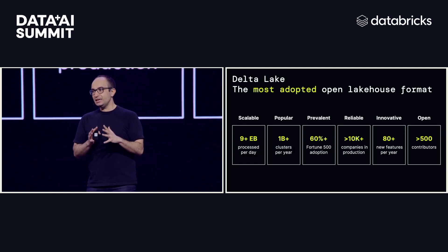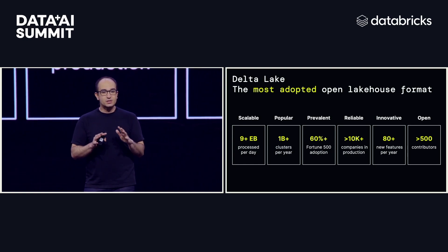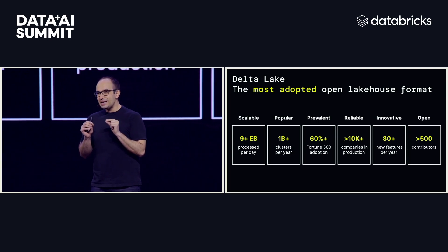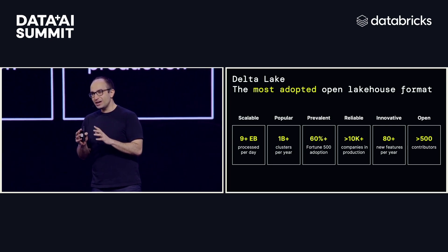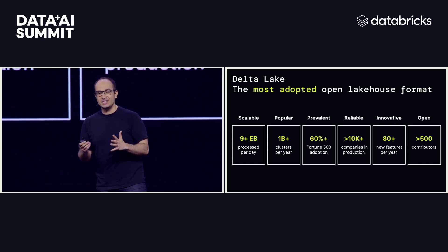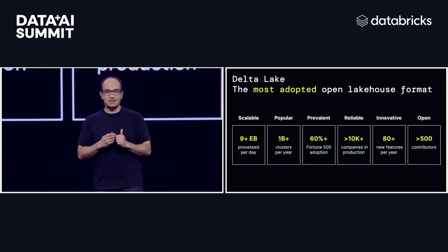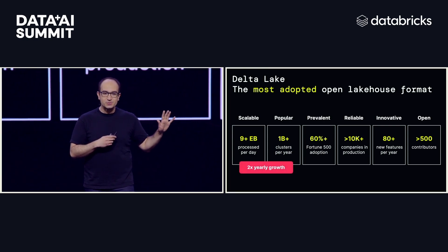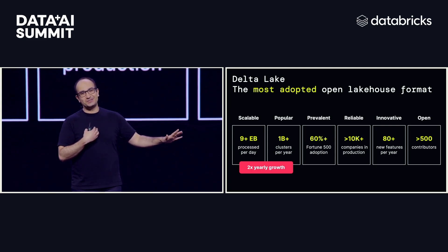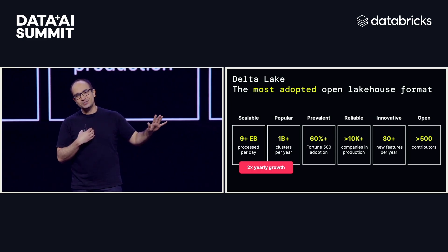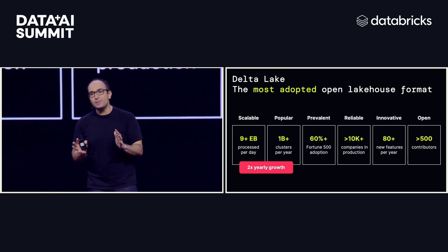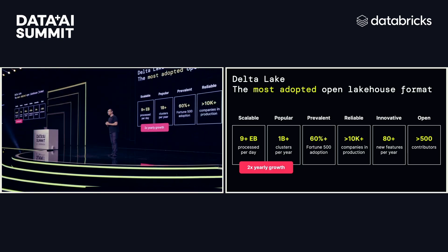Innovations like Uniform are really making Delta Lake the most adopted, open lake house format. There have been over nine exabytes of data processed on Delta yesterday. Over a billion clusters per year using it — tremendous growth, 2x more than last year. When I saw these numbers, I did not believe nine exabytes. Up until yesterday, we were going back, looking at the code, making sure they calculated correctly, because it's just a tremendous amount of data going into Delta every day.